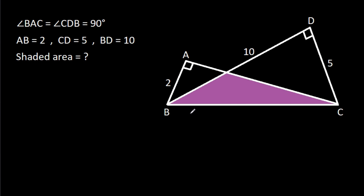In this video, we have been given that angle BAC is 90 degrees, angle CDB is 90 degrees, AB is 2, CD is 5, and BD is 10. We have to find the shaded area.